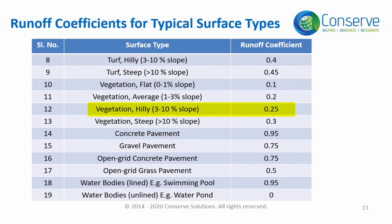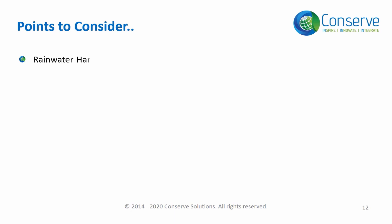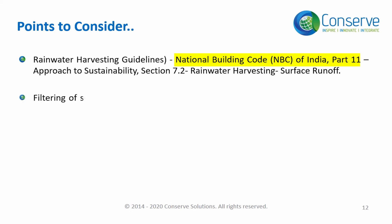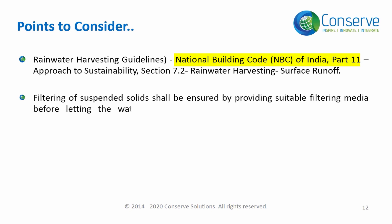Vegetated surfaces will have a runoff from 0.25 to 0.75; if the vegetation has slope, the runoff will increase. National Building Code of India Part 11, Section 7.2, Rainwater Harvesting, shall be referred for designing rainwater harvesting systems. The system should filter suspended particles using suitable filtering media before discharging water to collection tanks, water bodies, or municipal stormwater infrastructures.